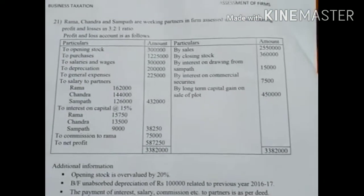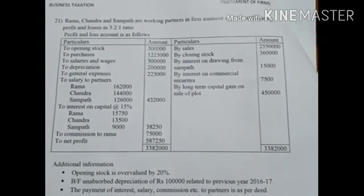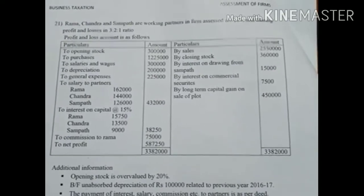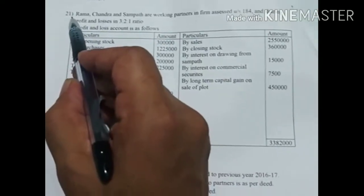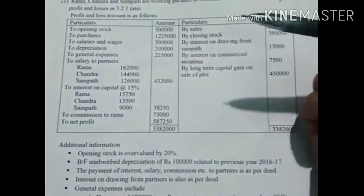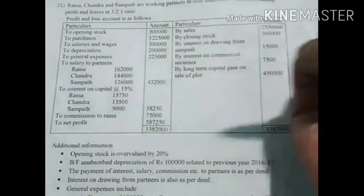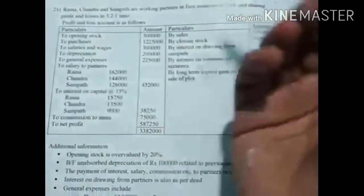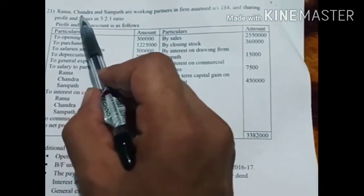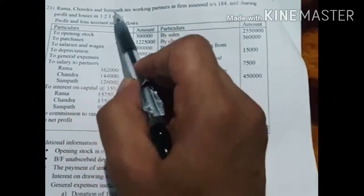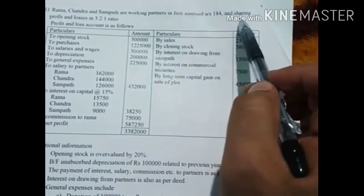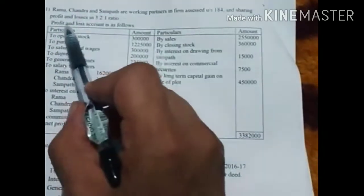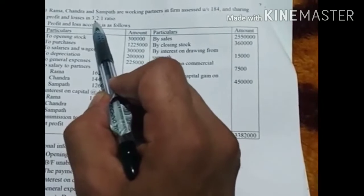Hello students, we will be solving a continuation problem under assessment of firm. This is problem number 121, which is very important as there are too many adjustments. Rama Chandra and Sampat are working partners of a firm assessed under Section 184, sharing profits and losses in the ratio of 3:2:1.